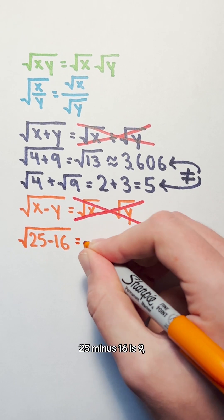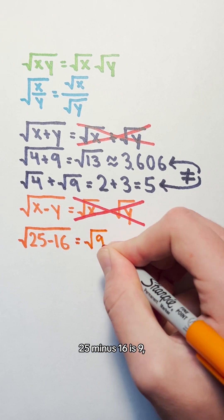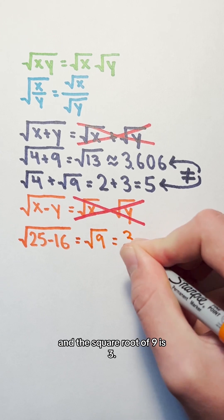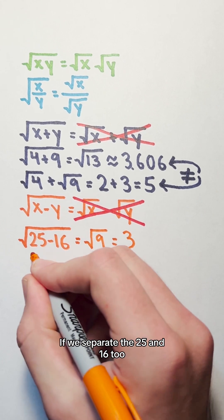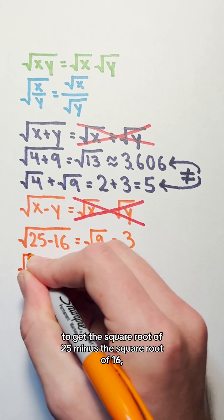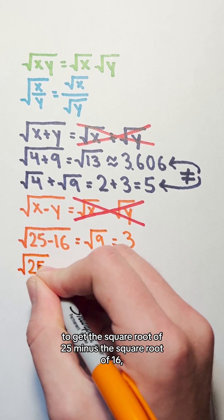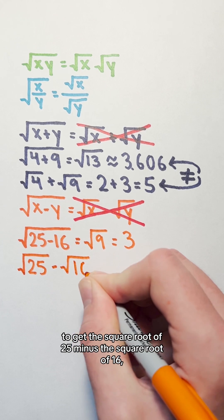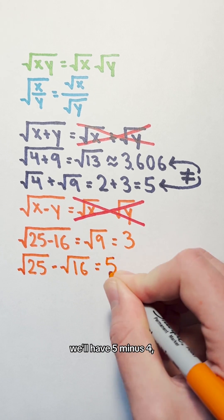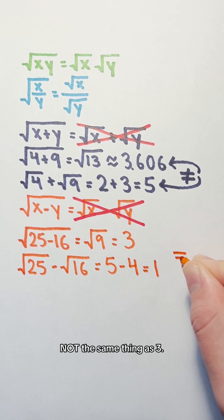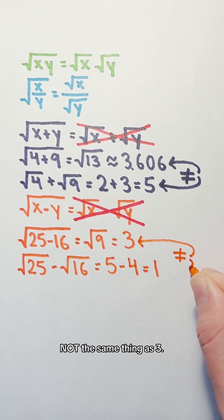25 minus 16 is 9, and the square root of 9 is 3. If we separate the 25 and 16 to get the square root of 25 minus the square root of 16, we will have 5 minus 4, which is 1. Not the same thing as 3.